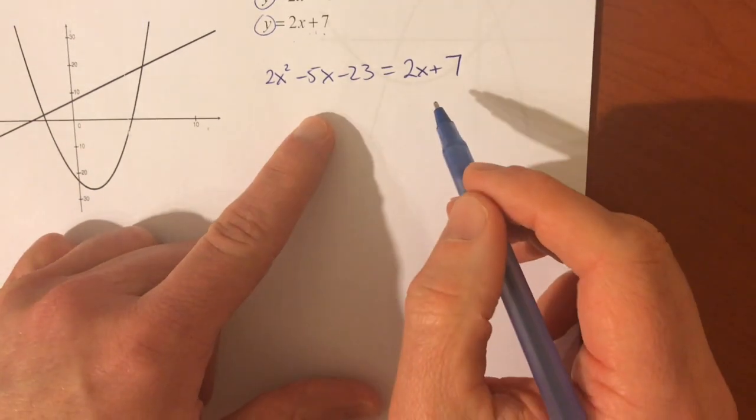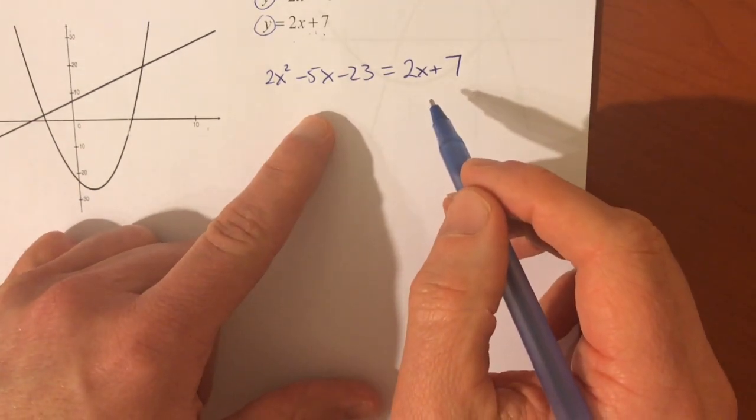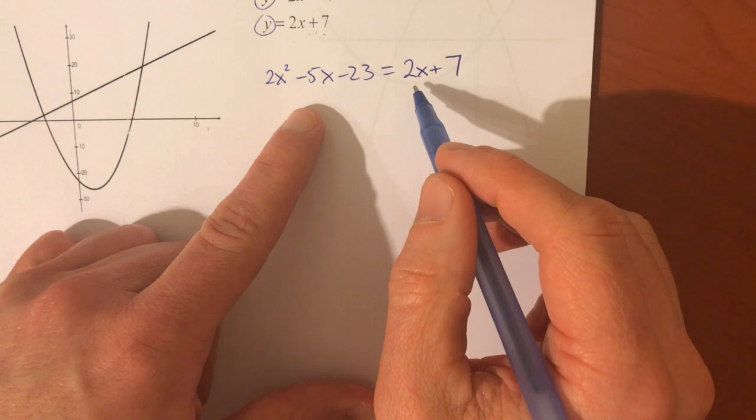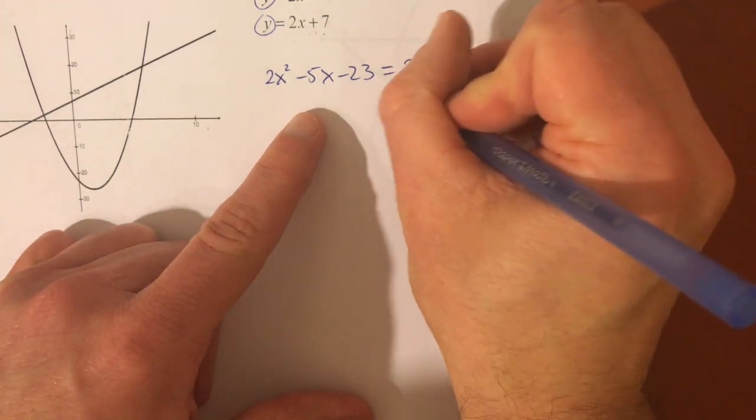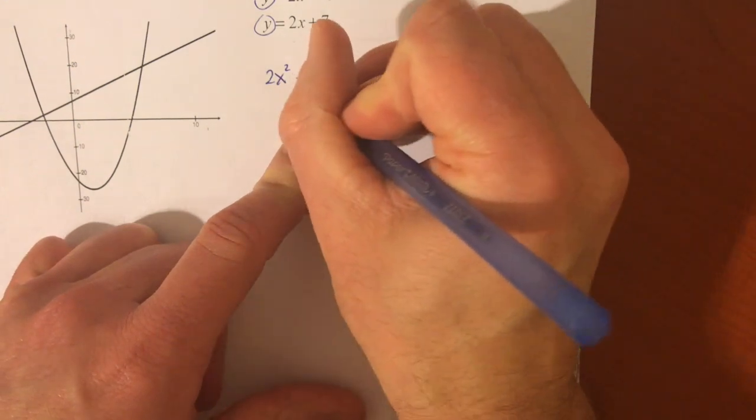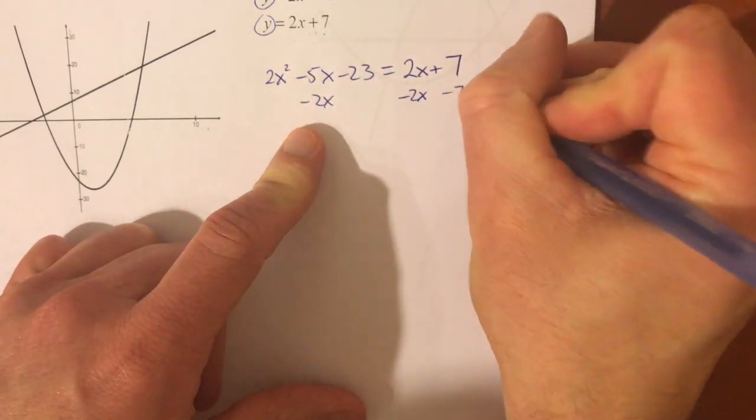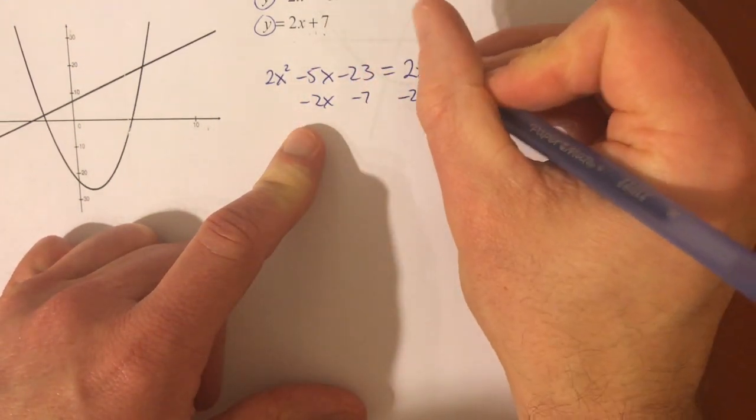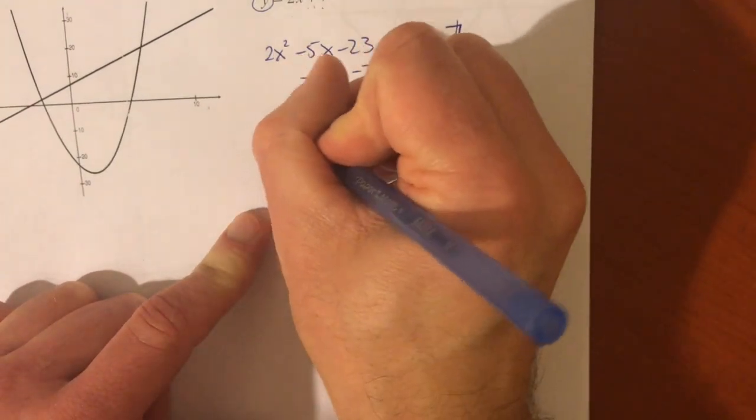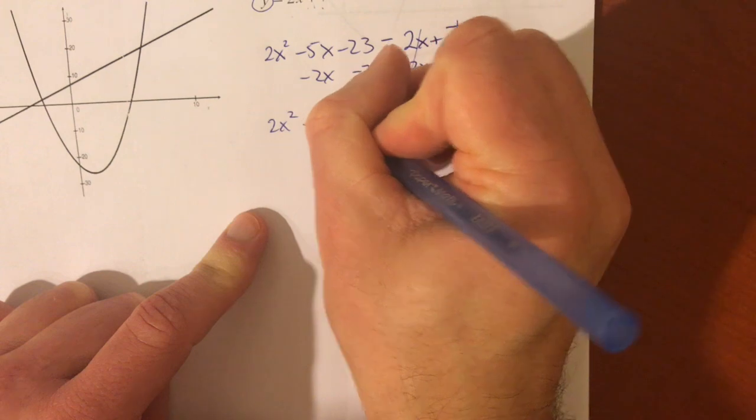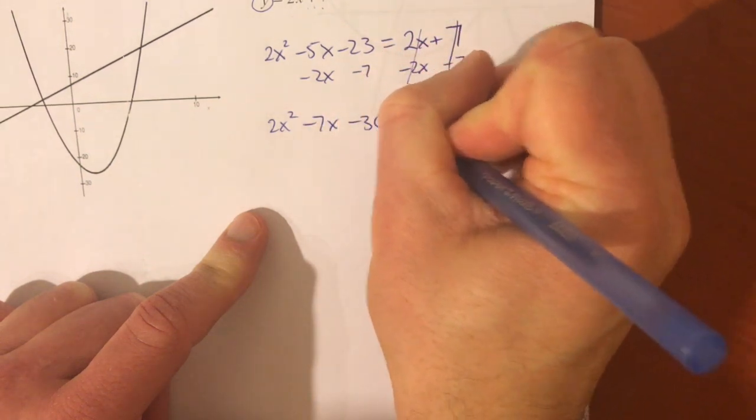And now, you see we're just solving an equation like we've been dealing with the last couple days. So, we're going to get everything on one side, we're going to be a hero, make it equal to zero. So I'm going to subtract 2x, I'm going to subtract 7, and now that's going to give me a new equation.